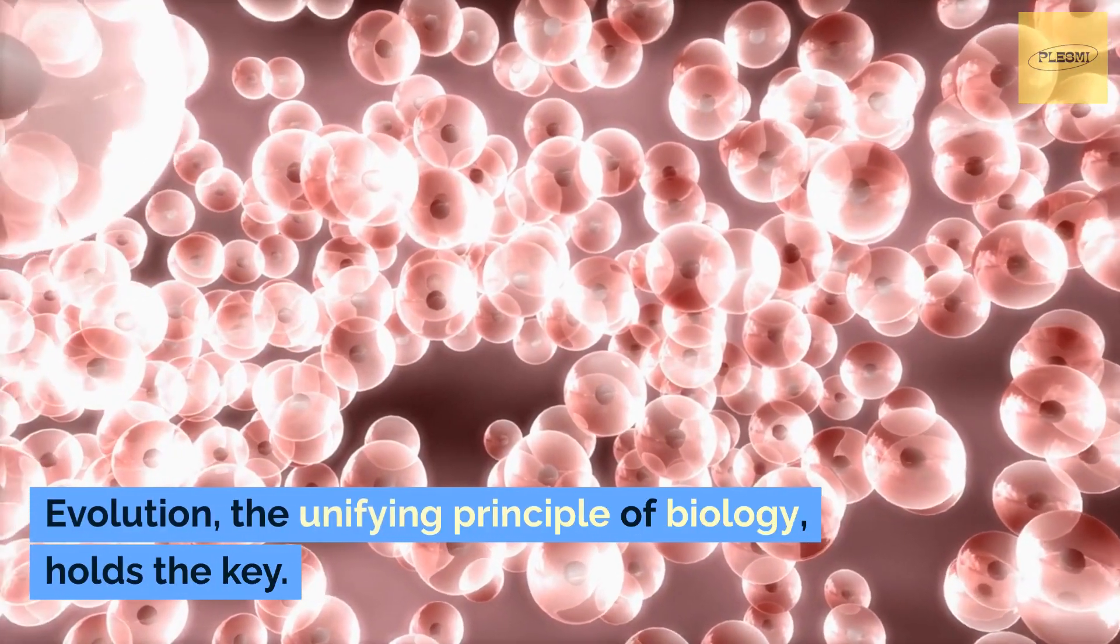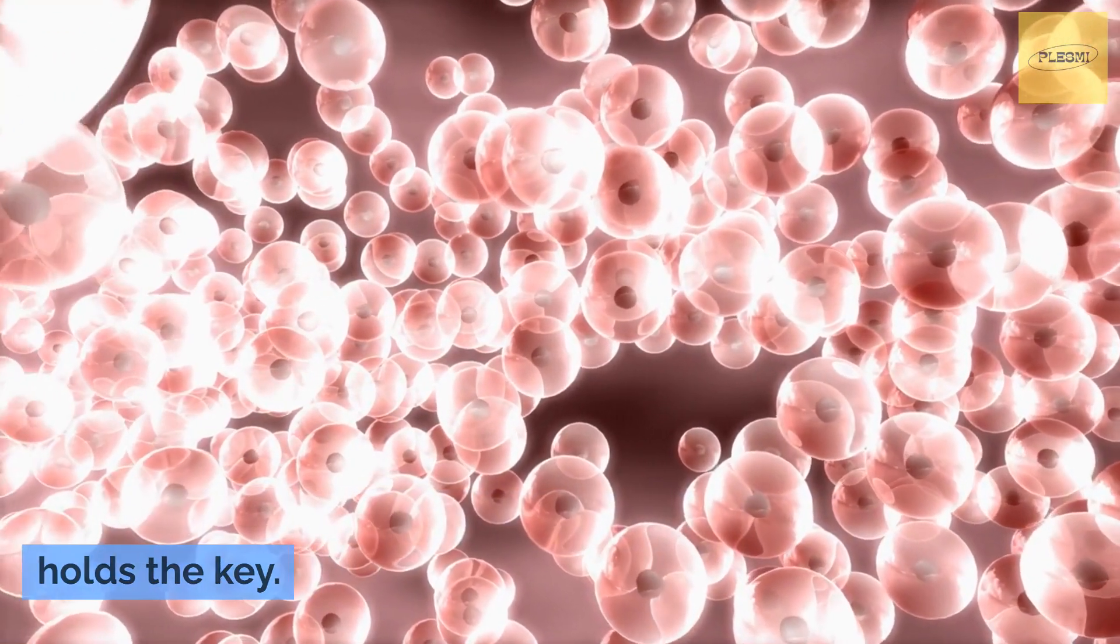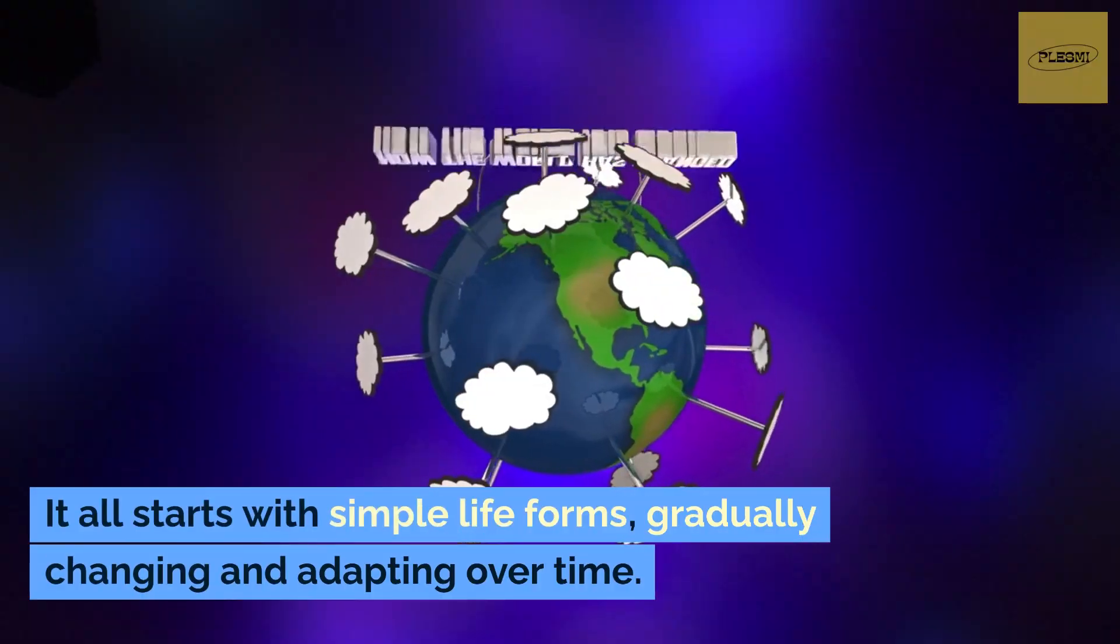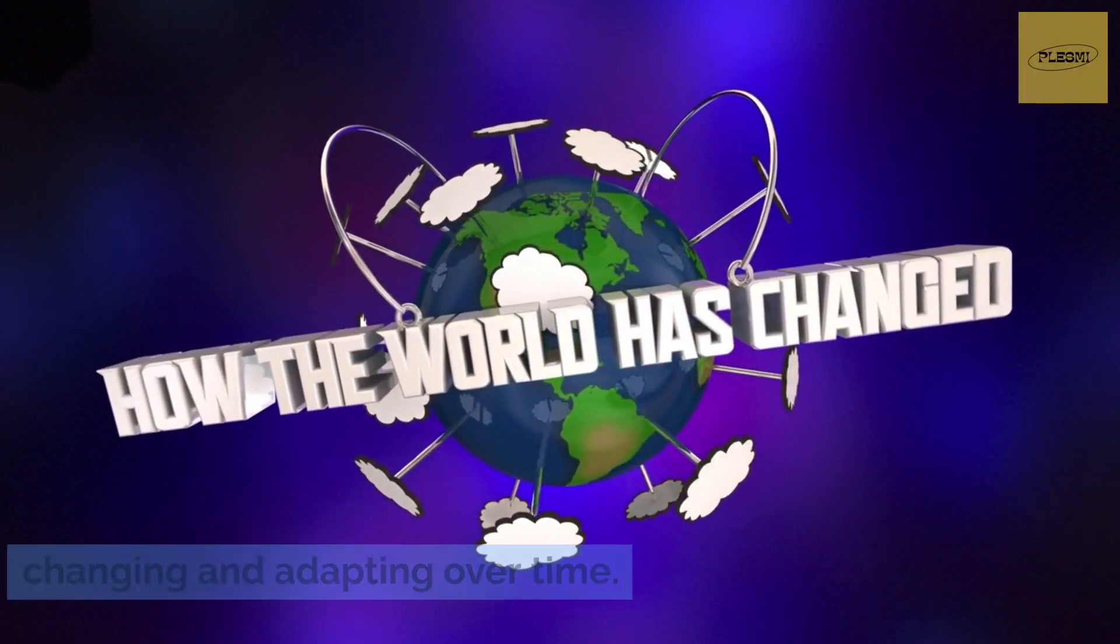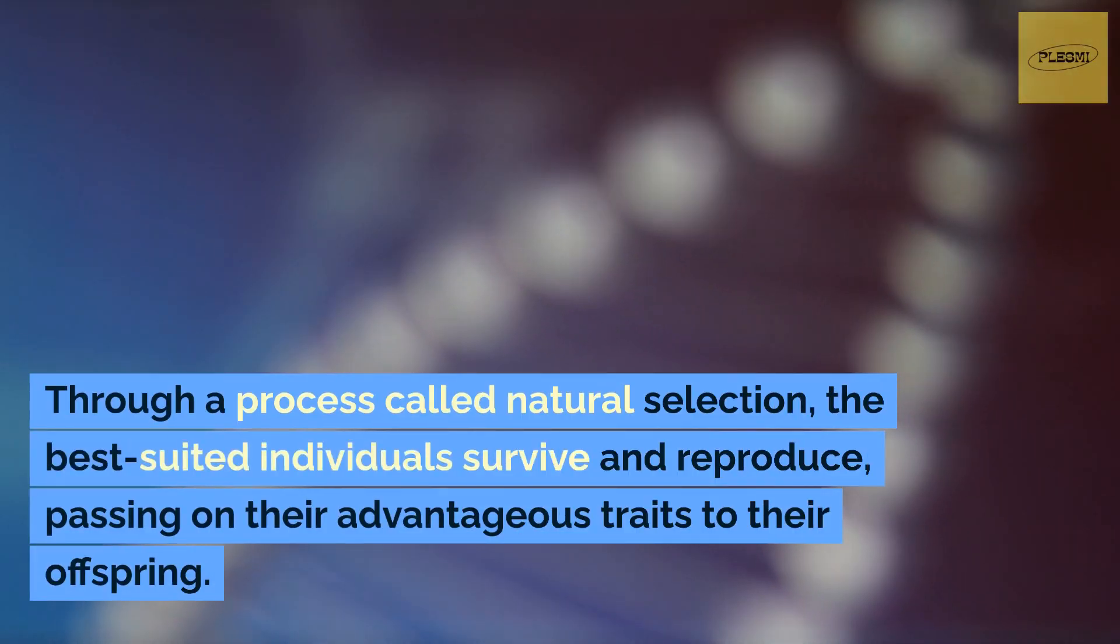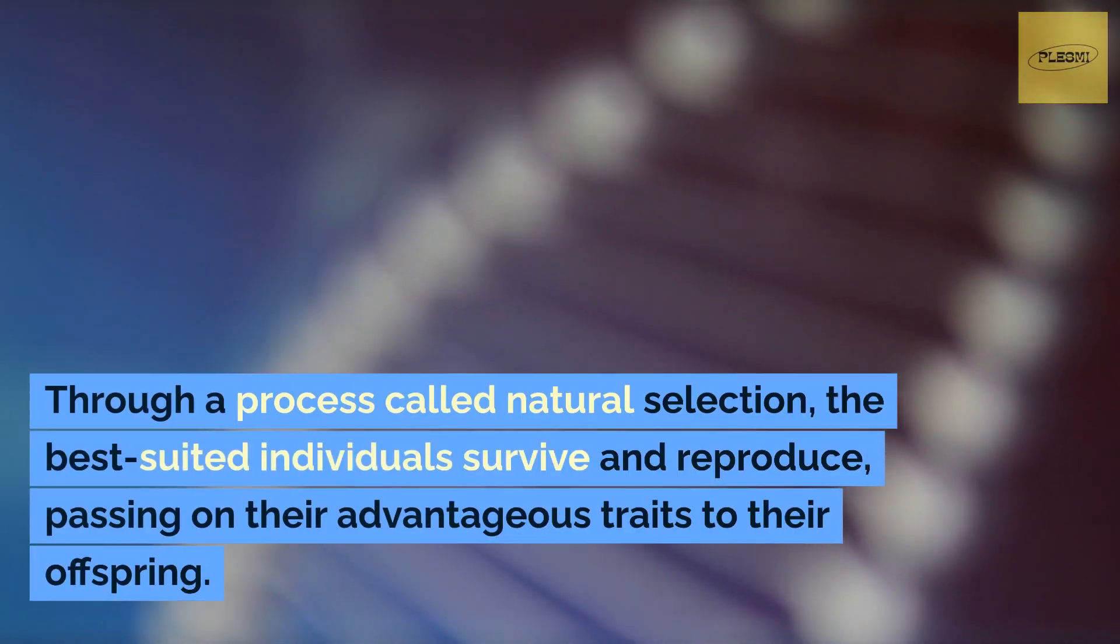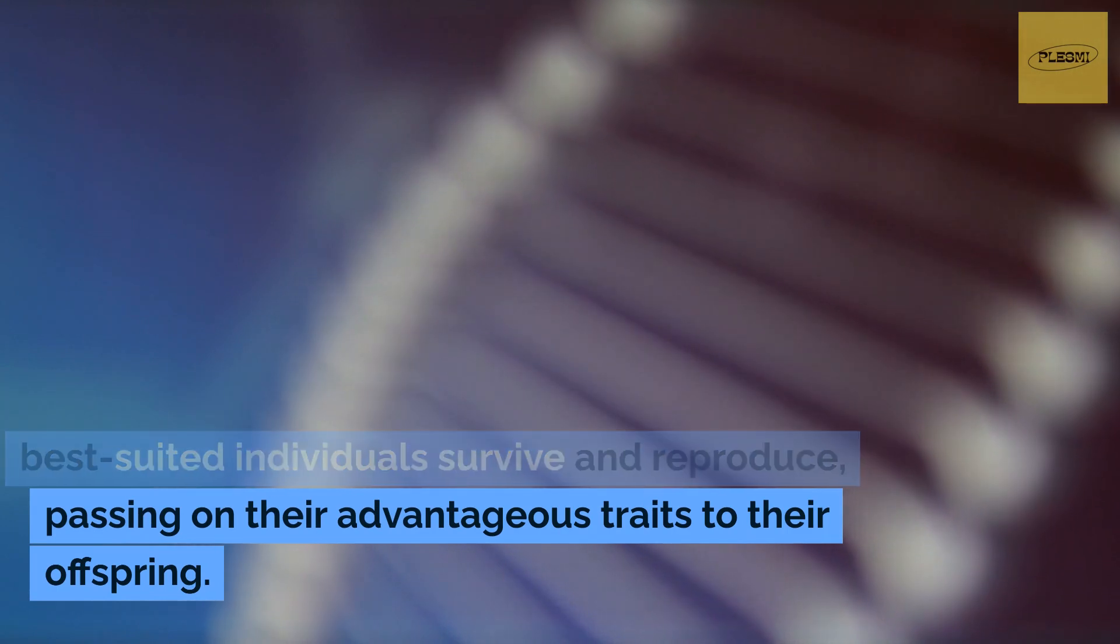Evolution, the unifying principle of biology, holds the key. It all starts with simple life forms, gradually changing and adapting over time. Through a process called natural selection, the best-suited individuals survive and reproduce, passing on their advantageous traits to their offspring.